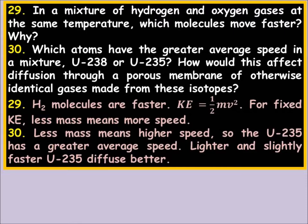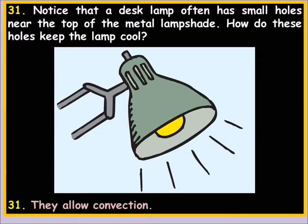Which atoms have the greater average speed in a mixture of U-238 and U-235? Less mass means higher speed, so U-235 has a greater average speed — it's lighter and slightly faster, so U-235 diffuses better. That's actually how they separated U-238 from U-235, since U-235 is the useful isotope for an atomic bomb. It was a very costly and painstaking process.